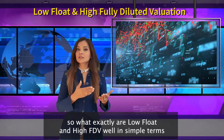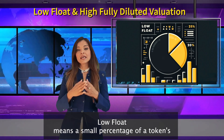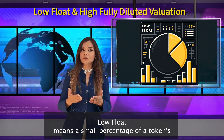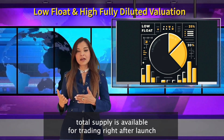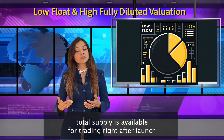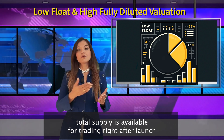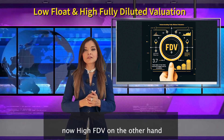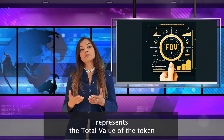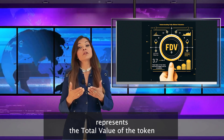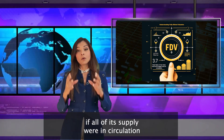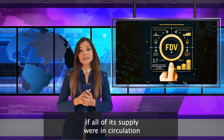In simple terms, low float means a small percentage of a token's total supply is available for trading right after launch. High FDV, on the other hand, represents the total value of the token if all of its supply were in circulation.